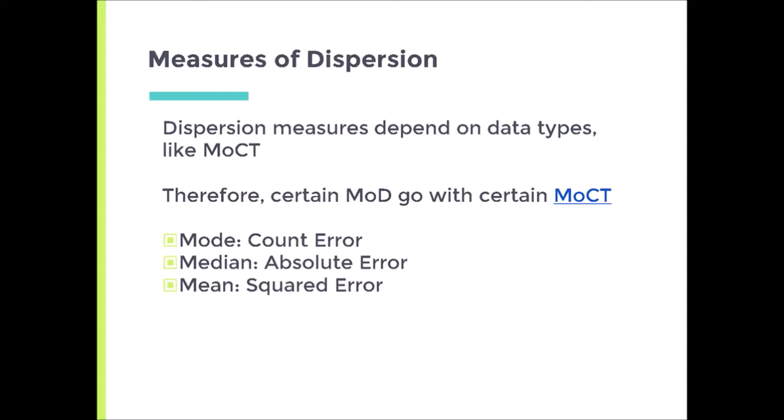The mode minimizes what is called count error because the mode is the most frequently occurring value. If I am simply saying, was I right? Yes or no - so was this value that person's value? And if it wasn't, I call it an error. I'm just counting right or not right. The mode, because it's the most commonly occurring value, will obviously minimize the number of times you are not right. So mode minimizes count error.